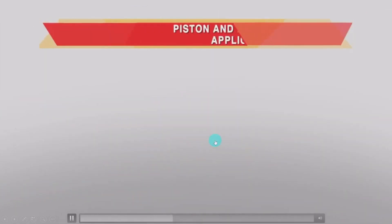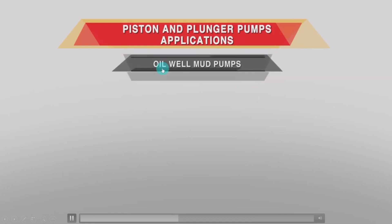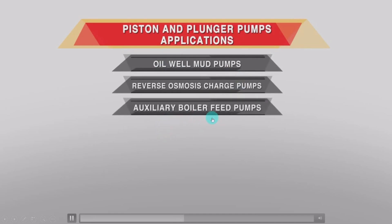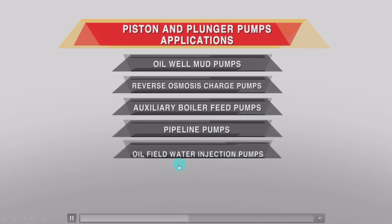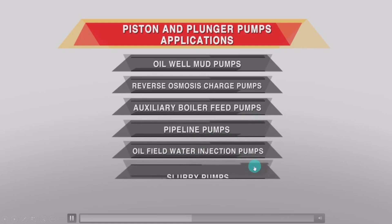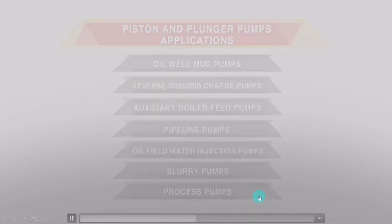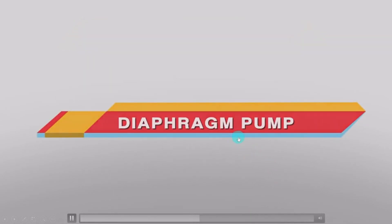Piston and plunger pumps are used in different applications, including: oil well mud pumps, reverse osmosis charge pumps, auxiliary boiler feed pumps, pipeline pumps, oil field water injection pumps, slurry pumps, and iron process pumps.